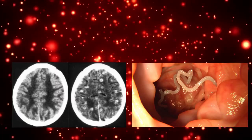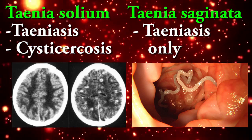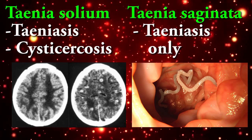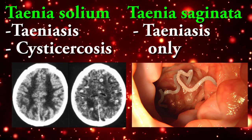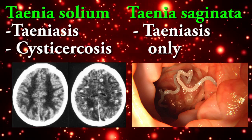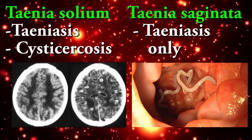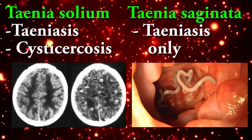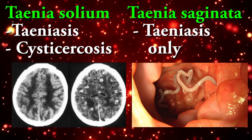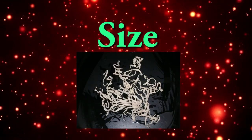Diseases: Taenia solium causes taenia cysts and cysticercosis, whereas Taenia saginata causes taenia cysts only.